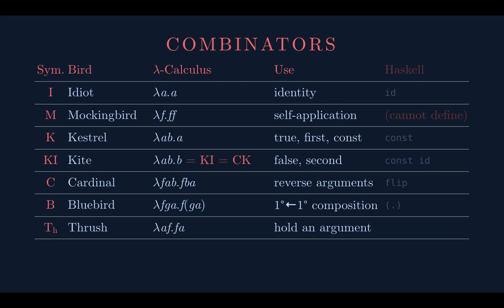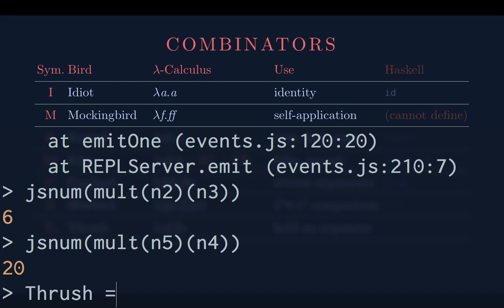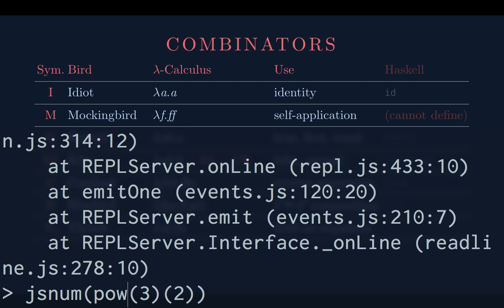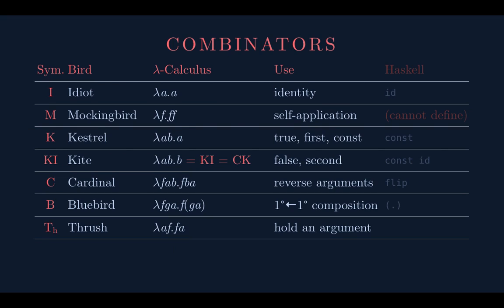We've added exponentiation using the Thrush combinator. I'll define it as 'pal': it takes an n and k and applies k to n. Raising three to the second power should give nine — there it is. By the way, the Thrush is the cardinal of identity. Just one more example of things going on in combinatorial logic.